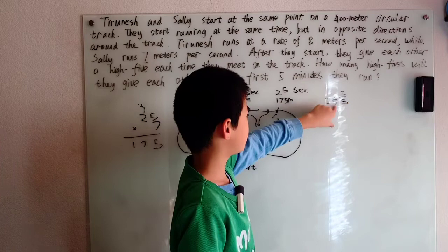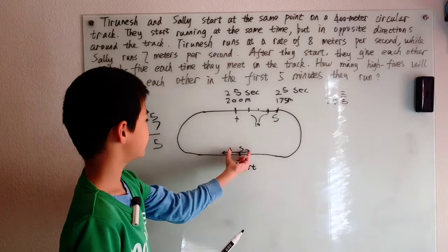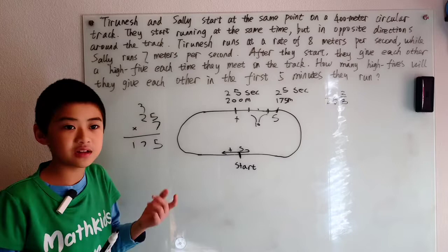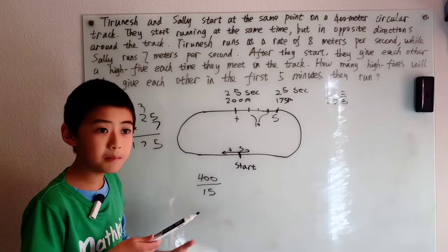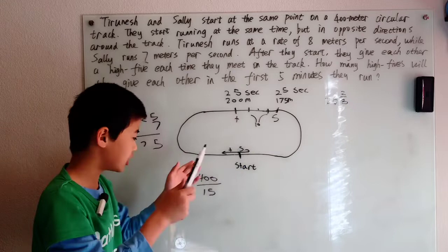Now we could have also got 26 and 2 thirds a different way, by saying that Tranish and Sally get 15 meters closer each second. I mean it's basically like each second they're cutting off a 15 meter chunk, right? Which means we can take the whole track and divide by 15, and then we get the number of these chunks or seconds.